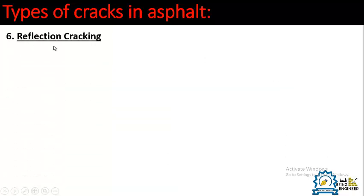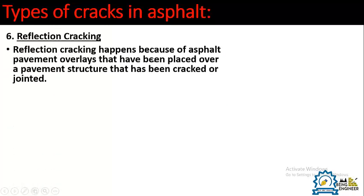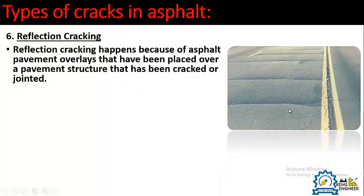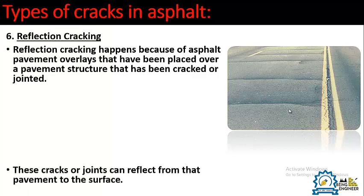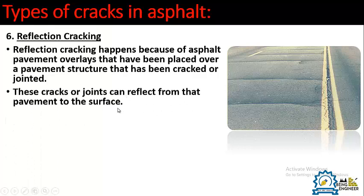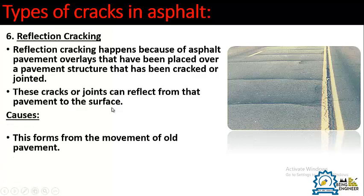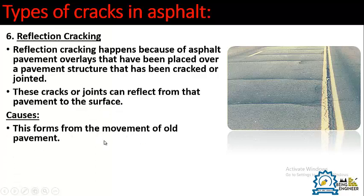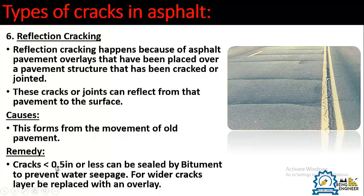Number six is reflection cracking. This occurs in asphalt overlays placed over a pavement structure that is already cracked or jointed — the cracks from the underlying layers reflect through to the surface. It forms due to movement of the old pavement beneath. The remedy: if the crack is less than 0.5 inches, it can be sealed with bitumen to prevent water seepage; for wider cracks, the layer should be replaced with an overlay.